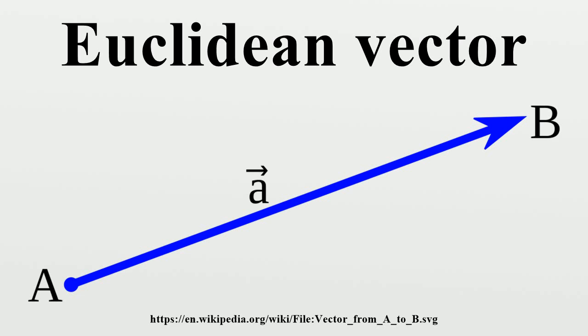For example, a vector in three-dimensional space can be decomposed with respect to two axes, respectively normal and tangent to a surface. Moreover, the radial and tangential components of a vector relate to the radius of rotation of an object. The former is parallel to the radius and the latter is orthogonal to it. In these cases, each of the components may be in turn decomposed with respect to a fixed coordinate system or basis set.